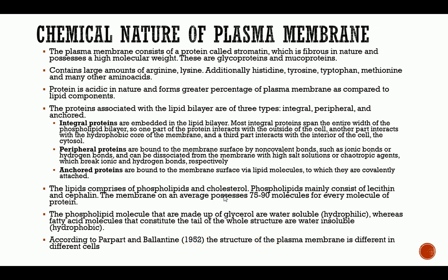The plasma membrane also contains large amounts of arginine, lysine, histidine, tyrosine, tryptophan, methionine, and many other amino acids. Protein is acidic in nature and forms a greater percentage of the plasma membrane as compared to lipid components. The proteins associated with the lipid bilayer are of three types: integral, peripheral, and anchored.